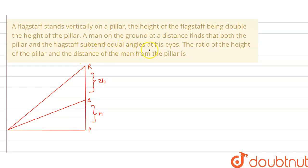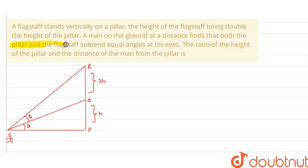The man is standing here. This angle is theta and this is also theta, because the problem states that both the pillar and the flagstaff subtend equal angles at his eyes. We need to find the ratio of the height of the pillar to the distance of the man from the pillar.